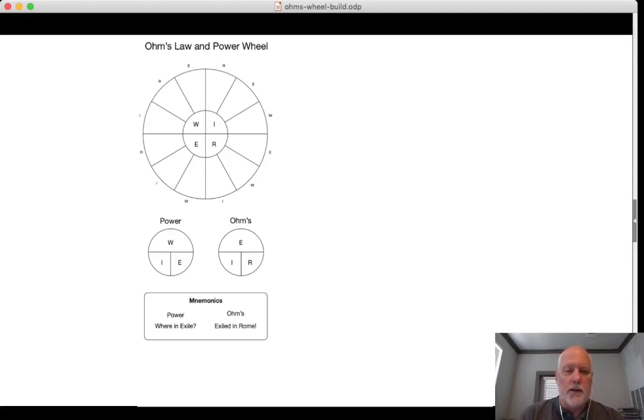Similarly for Ohm's law, we have E is equal to the product of I and R. That's by the vertical bar. And then if we look at I, we see the horizontal bar between E and R. We see that I is equal to E over R. And R similarly is equal to E over I. E is always on top on the Ohm's equations. And W is always on top on the power equations.